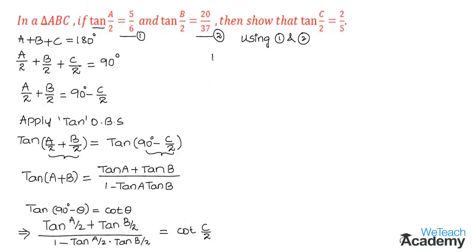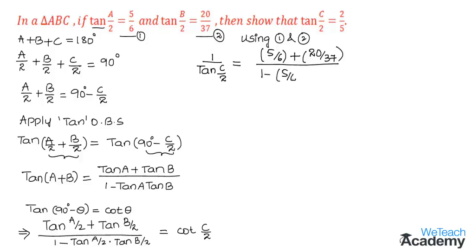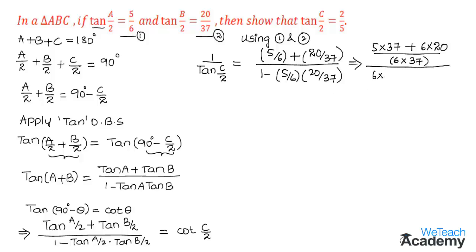We can write cot(C/2) as 1 divided by tan(C/2). Substituting equations 1 and 2, we get: 1 by tan(C/2) equals (5/6 plus 20/37) divided by (1 minus 5/6 times 20/37). Taking the LCM in the numerator gives (5×37 plus 6×20) divided by (6×37), and in the denominator we get (6×37 minus 5×20) divided by (6×37).